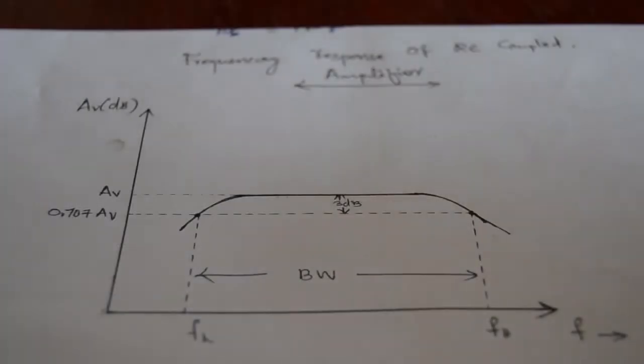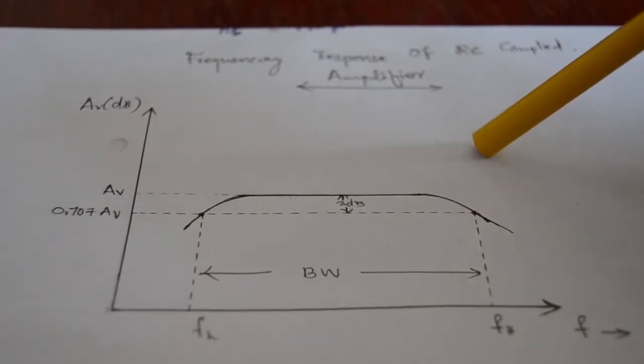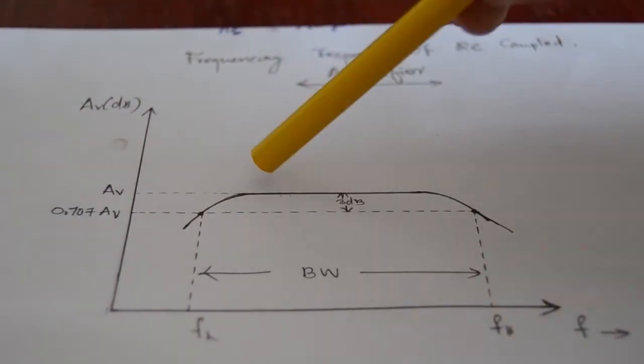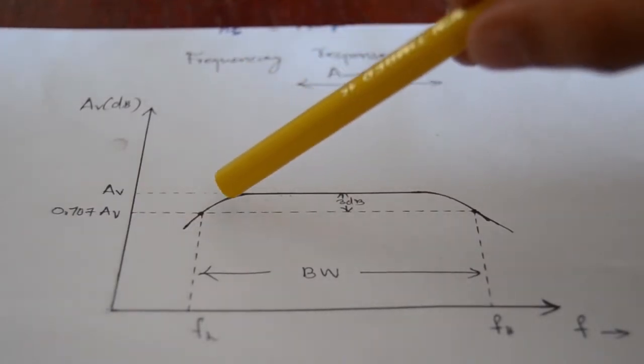Now, let's check the frequency response characteristics of RC Coupled Amplifier. This is the frequency response characteristics. We can observe from the graph that at low frequency, the voltage gain will be low.